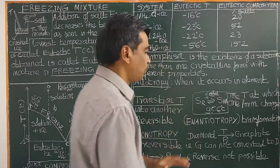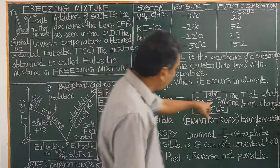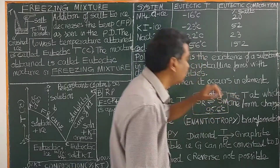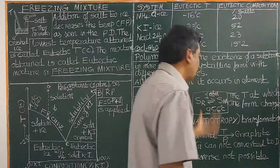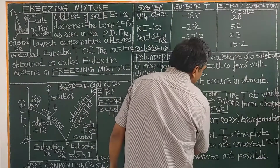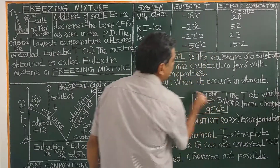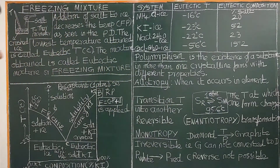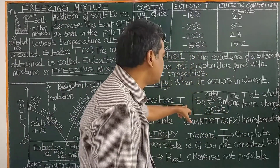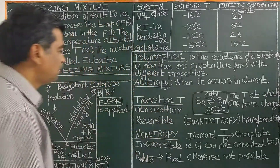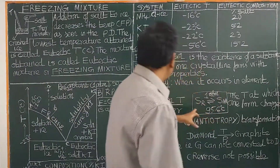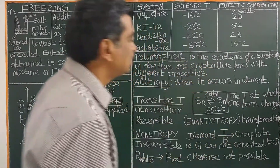Next we will see what is enantiotropy. On heating sulfur rhombic at 95.6 degrees Celsius, it is converted into the monoclinic crystalline form of sulfur. On cooling, sulfur monoclinic at 95.6 degrees Celsius is converted back into sulfur rhombic. There is a reversible transformation — it occurs in both forward and reverse directions. If the allotropic transformation is reversible, then it is called enantiotropy.